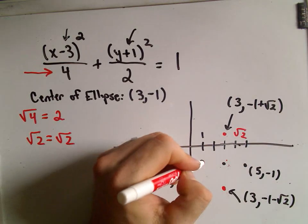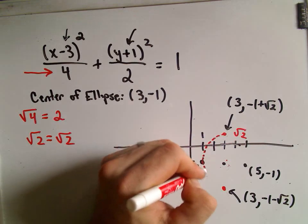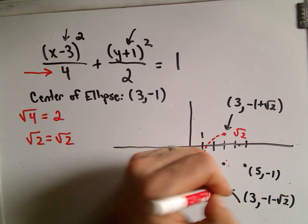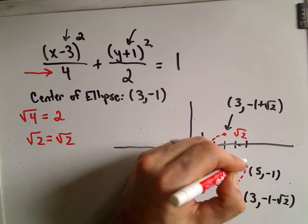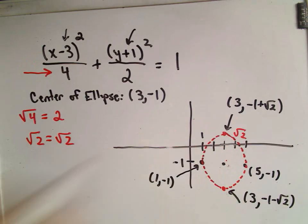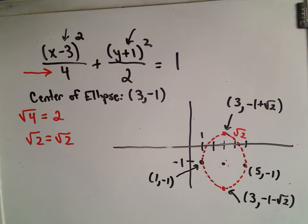Let's label all of our points. The ellipse is centered at (3, negative 1). Moving right gives (5, negative 1); moving left gives (1, negative 1). Moving up square root of 2 units gives the point (3, negative 1 plus root 2), and the point at the bottom is (3, negative 1 minus square root of 2). Connect the dots to get a rough graph of the ellipse.